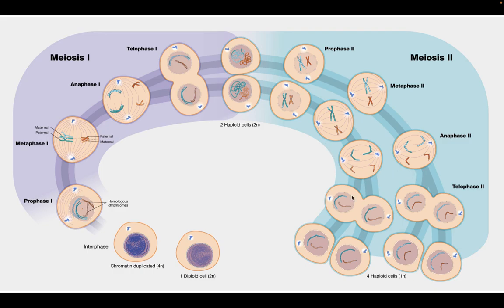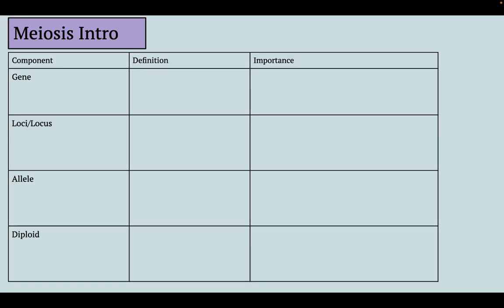Haploid means there's only one copy of a chromosome. We're going to get into some key terms and definitions and some ideas to get you started. A lot of this we'll be practicing and doing in class with an activity.